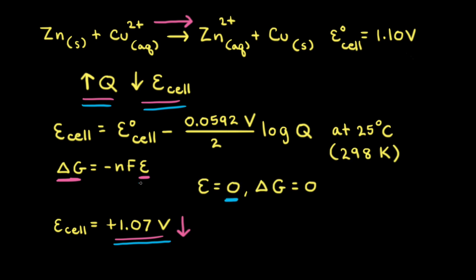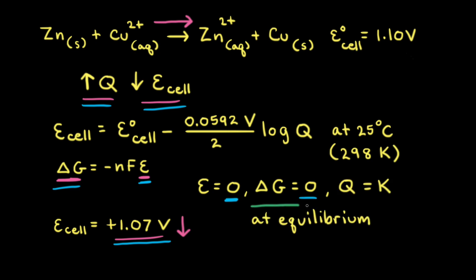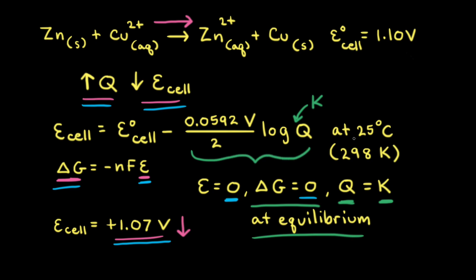When the voltage reaches zero, delta G equals zero and the reaction is at equilibrium. The reaction quotient Q equals the equilibrium constant K. If you plug K in for Q, the entire second term equals positive 1.10 volts and cancels out the standard cell potential, giving an instantaneous potential of zero volts. So if we think of our zinc-copper cell as a battery, when the reaction reaches equilibrium, the voltage equals zero and the battery is dead.